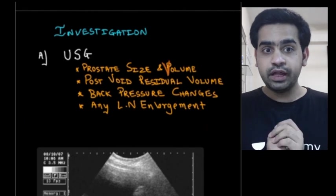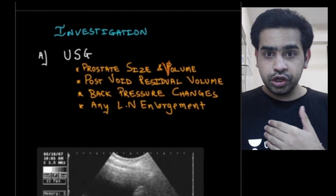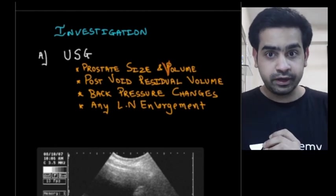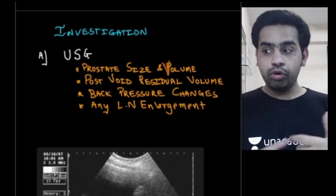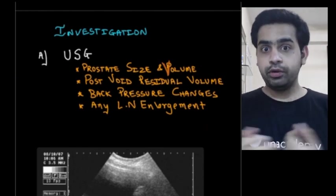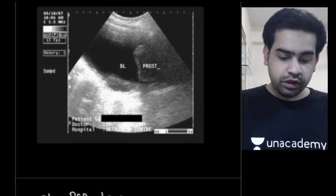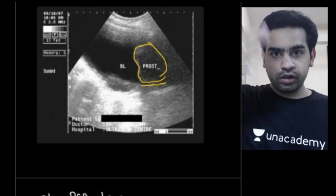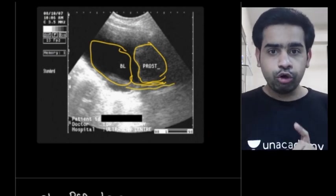On USG, you also want to look for back pressure changes on the kidneys — specifically to rule out hydronephrosis — because if the prostate is causing urine accumulation, the kidneys may be affected and you must intervene. Lastly, you check for surrounding lymph node enlargement to rule out prostatic carcinoma. This is an enlarged prostate on USG, pushing up on the bladder with a narrowed urethra.